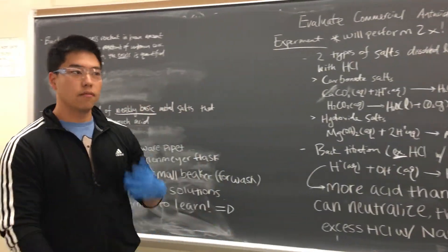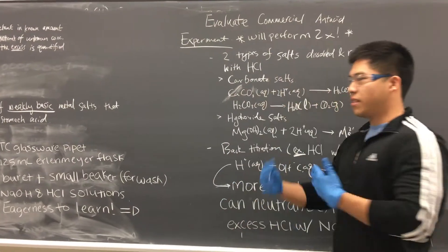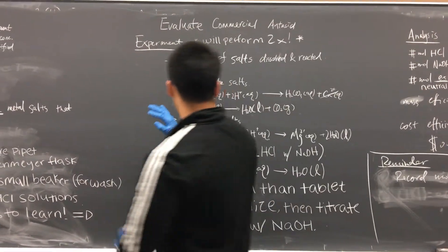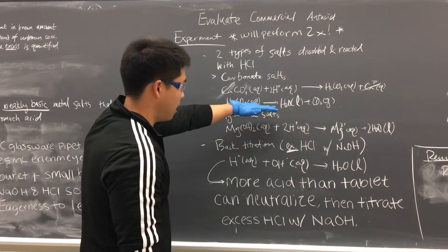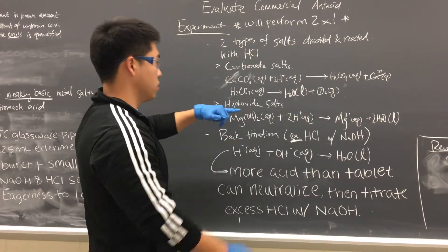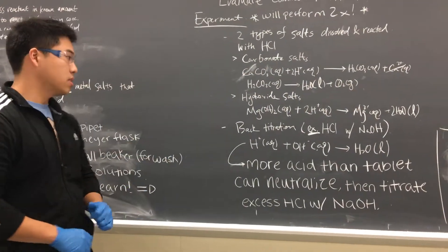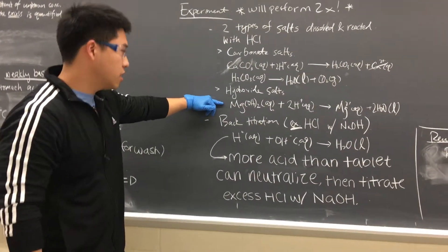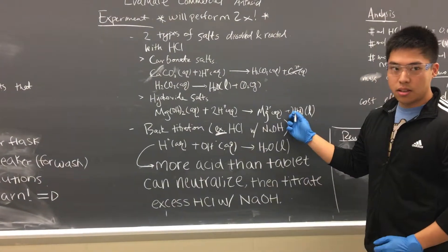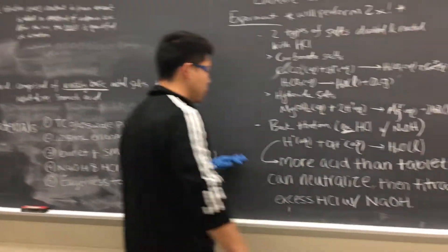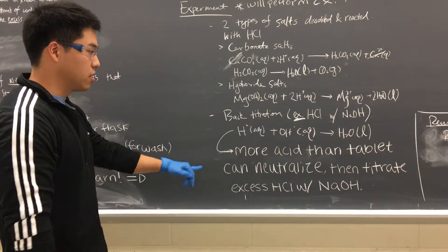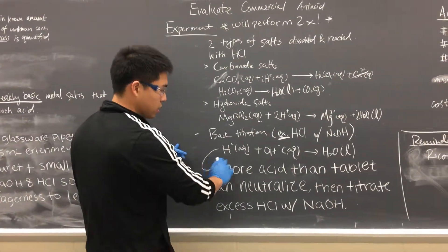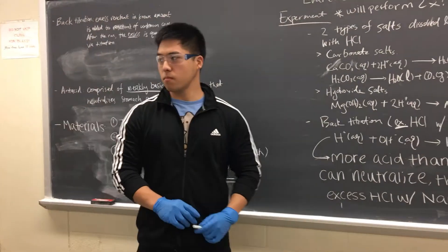The experiment, you will perform it twice, very similar to what you did last week. Your antacids will be two types of salts dissolved and reacted with hydrochloric acid. One type is the carbonate salts — in this case, calcium carbonate reacts with acid to produce carbonic acid, which dissociates into liquid water and carbon dioxide. We also have the hydroxide salts. A typical salt used in antacids is magnesium hydroxide, which reacts with two moles of acid to give magnesium ion and two moles of liquid water. In the back titration, we're adding more acid than the tablet can neutralize, and at the end, we titrate that excess acid with sodium hydroxide. Essentially, acid plus base turns into liquid water.